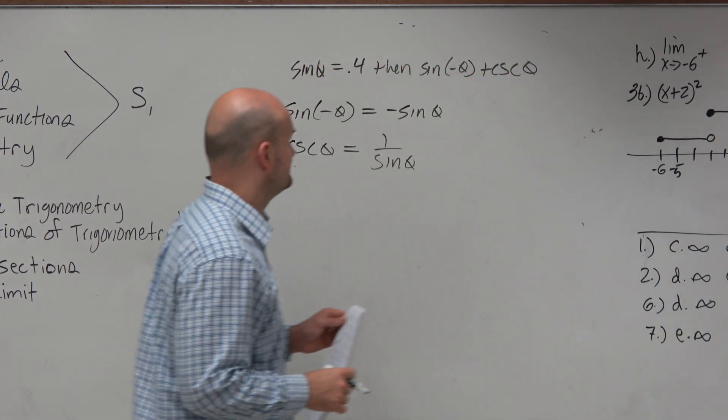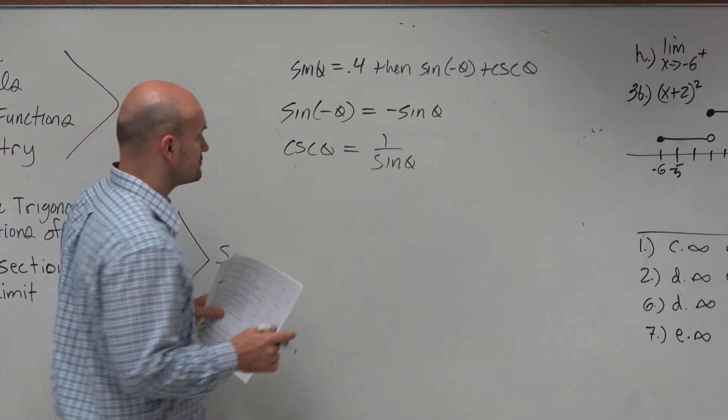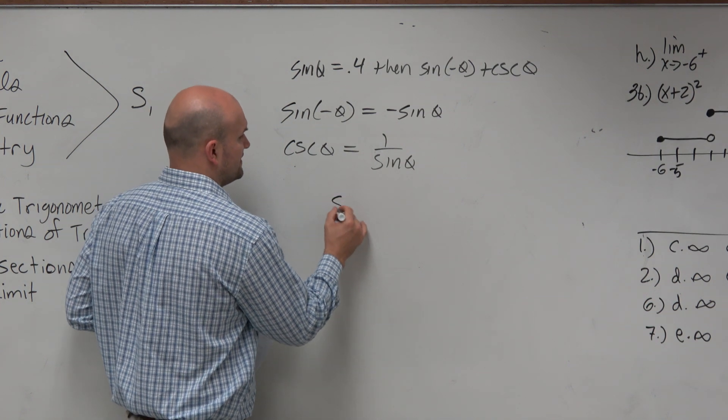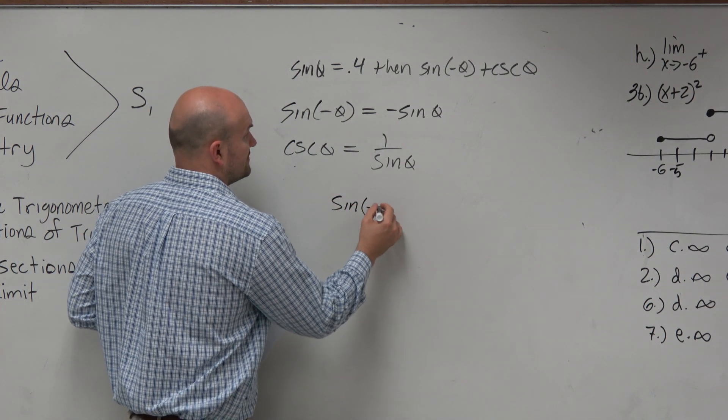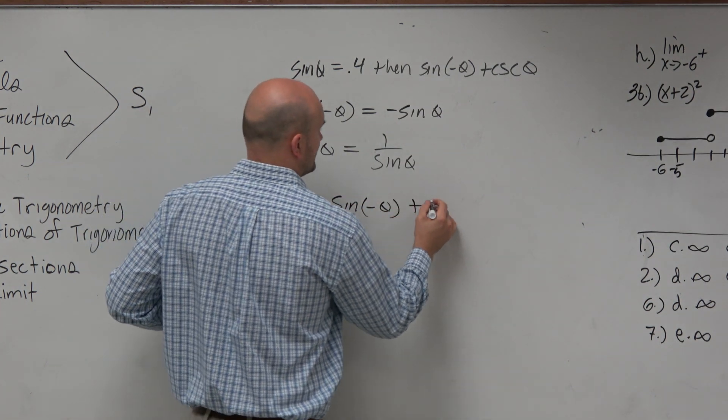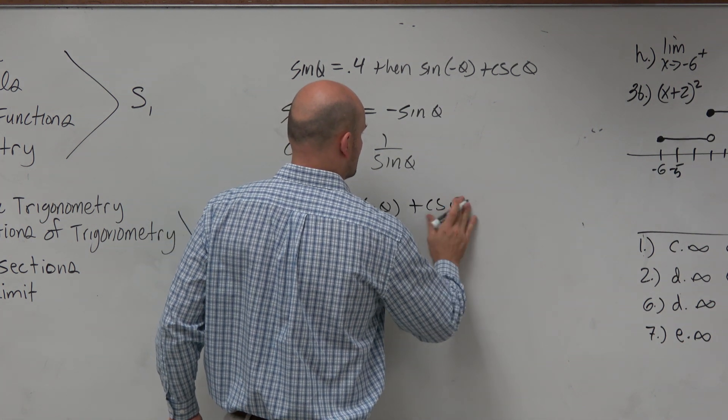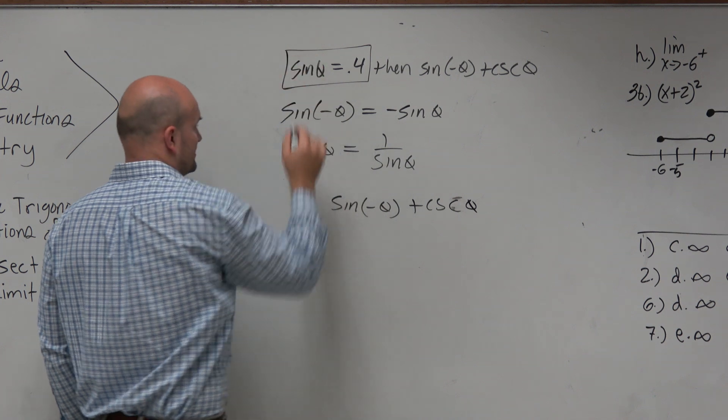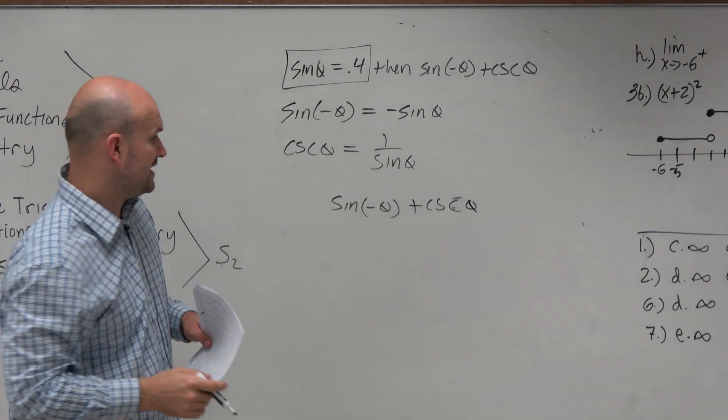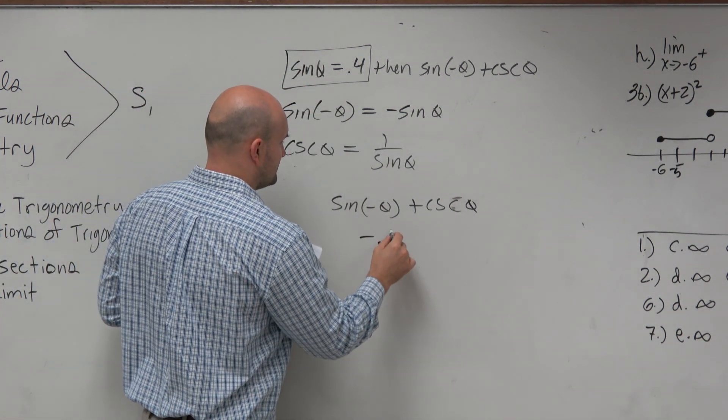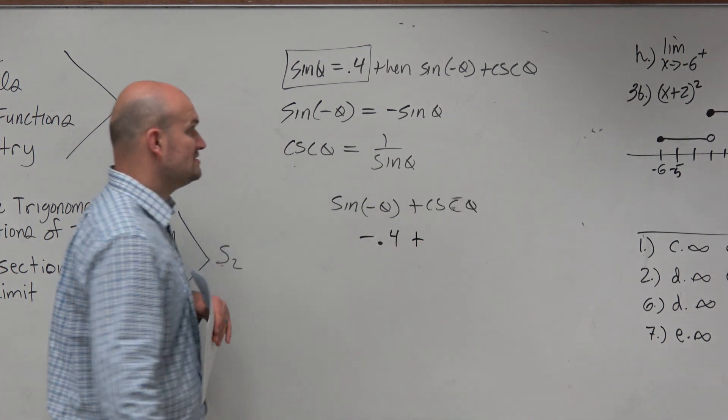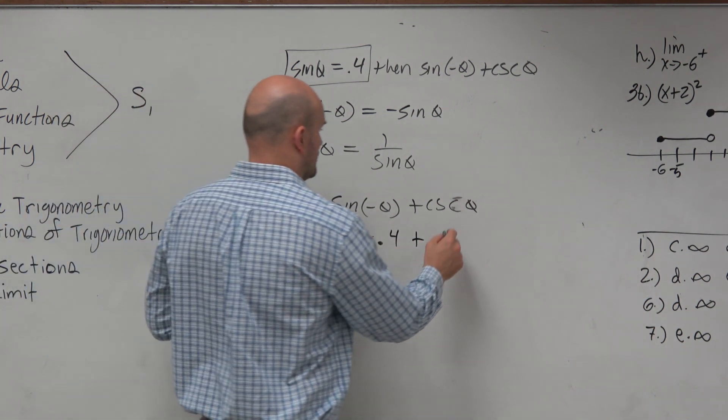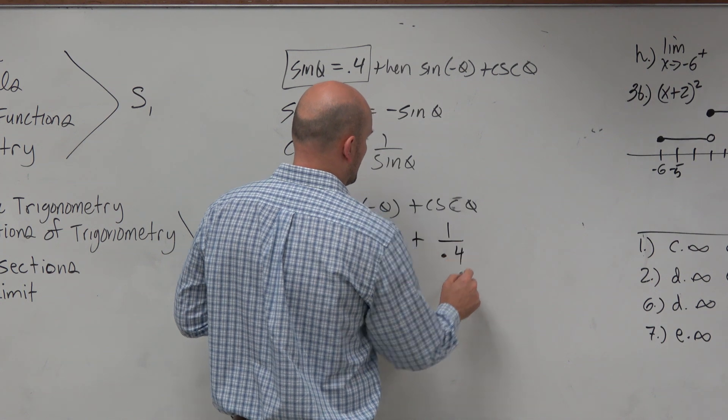Right? All right. So let's see here. We have the sine of negative theta plus the cosecant of theta. And we know that the sine of theta is 0.4. Well, then the sine of negative theta is going to be a negative 0.4 plus the cosecant, which is going to be 1 over 0.4.